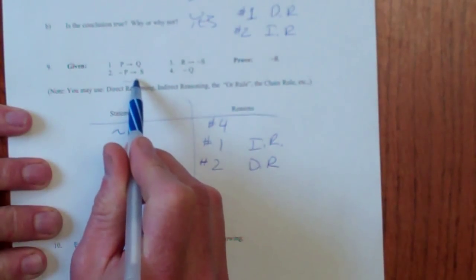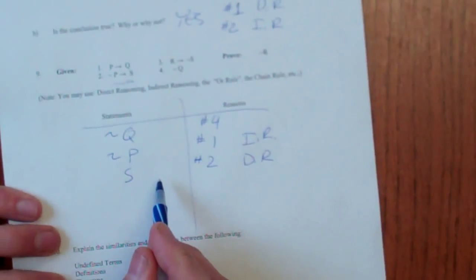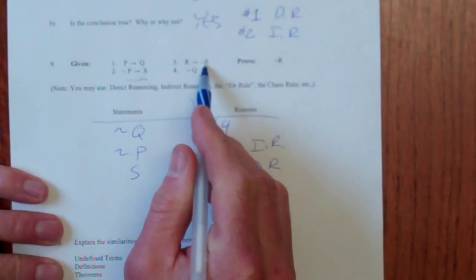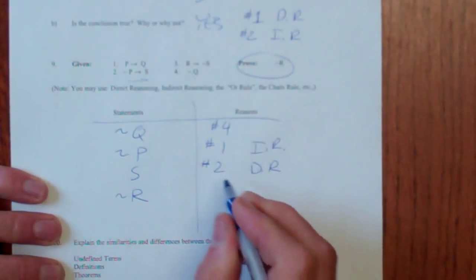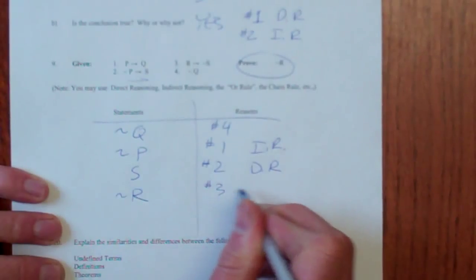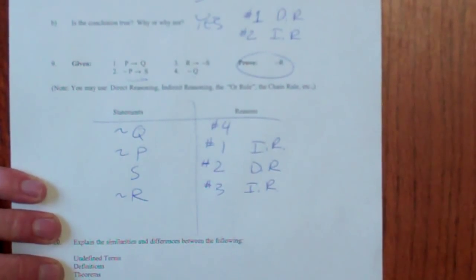And then finally, if we've got S, I can go backwards to say not R. And that's what I'm trying to prove right there. And that's number three and indirect reasoning.